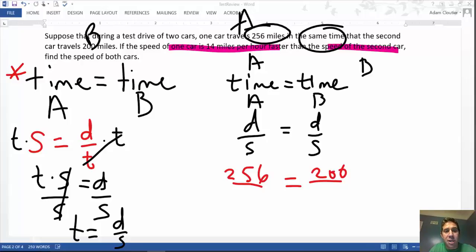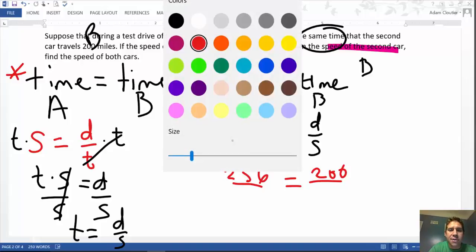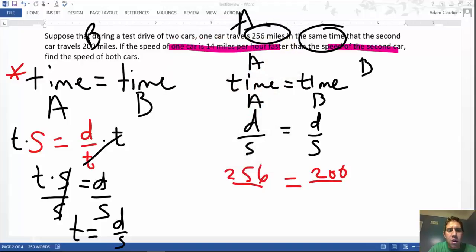Now, look for speed. Again, it says one car is 14 miles per hour faster than the speed of the second car. We need a variable. And since we're comparing A with B, we should probably say B or X equals the speed of the second car, which in this case is car B.